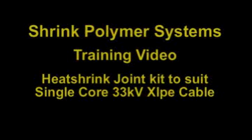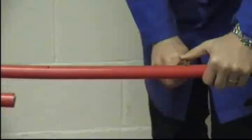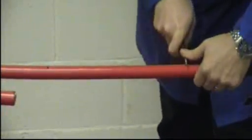We're about to show you the installation of a heat shrink joint to suit single core 33kV XLB cable. Using the instruction sheet, mark out the cable to the dimensions shown.